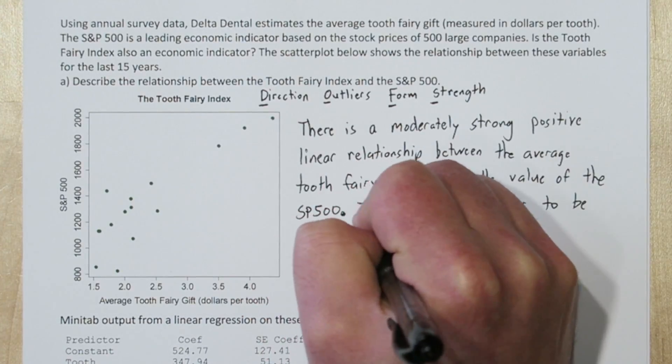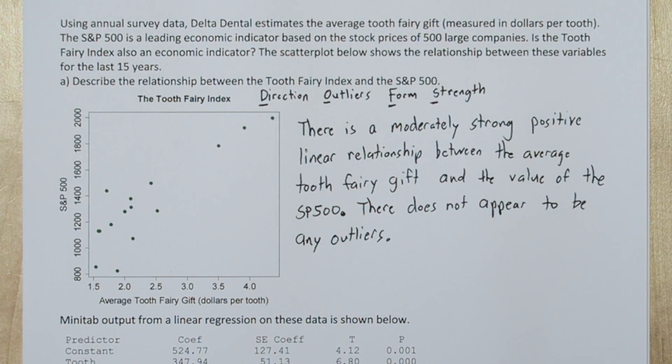There does not appear to be any outliers. We know the direction is positive because as the average tooth fairy gift increases, the S&P 500 seems to be increasing as well. There's no obvious curvature in the scatterplot, so the form does seem linear. And the points on the scatterplot fit that linear pattern fairly well, so the strength is at least moderately strong.